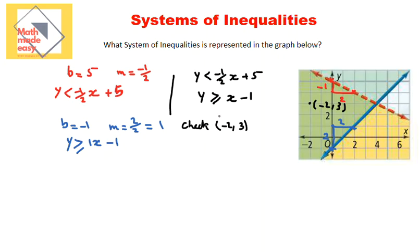So I'm going to check negative 2 and 3 as a solution for the system. In this case, you need to substitute in both inequalities. So I'm going to say, is 3 less than negative half multiplied by negative 2 plus 5? Well, we're going to find out. Negative half times negative 2 is actually equal to 1. 1 plus 5 is 6, and definitely 3 is less than 6. Let's look at the other inequality. Is 3 greater than or equal to negative 2 minus 1? Well, 3 is greater than or equal to negative 3 for the other inequality as well.